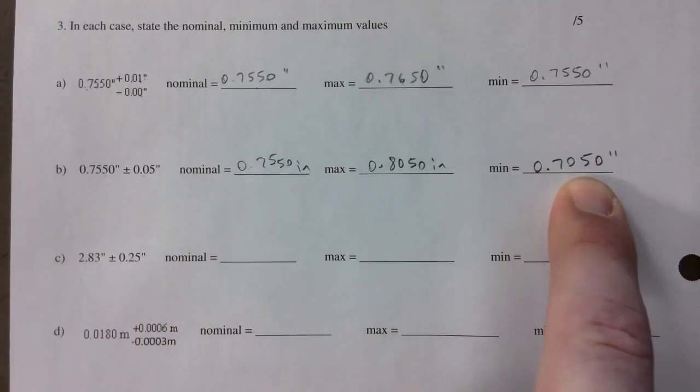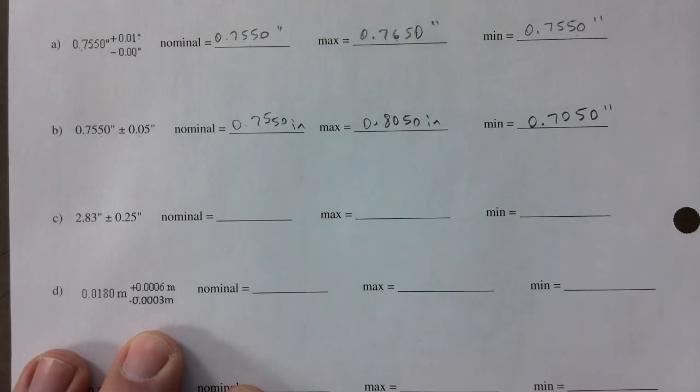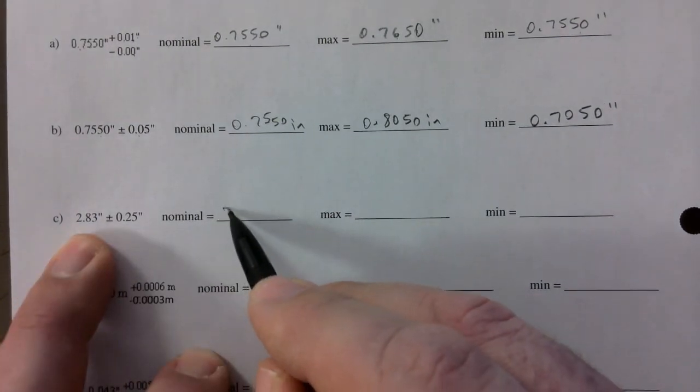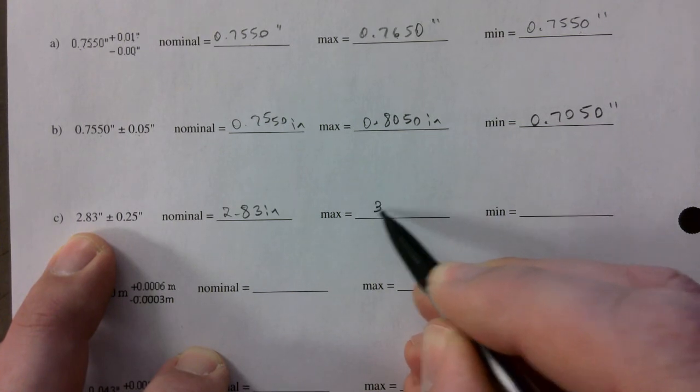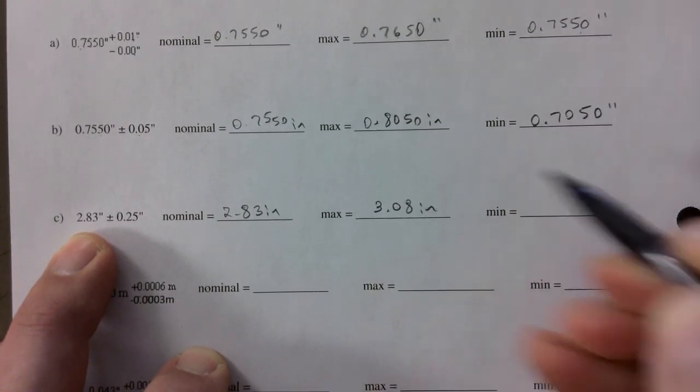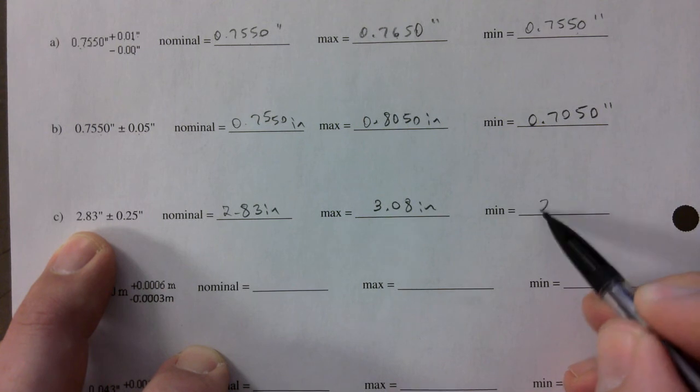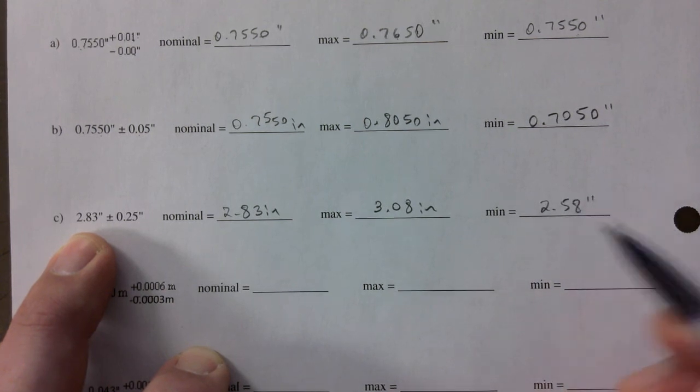Nominal again, it's 2.83 of an inch. Maximum would be 3.08 of an inch, and minimum would be 2.58 of an inch.